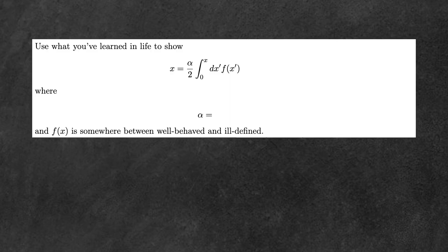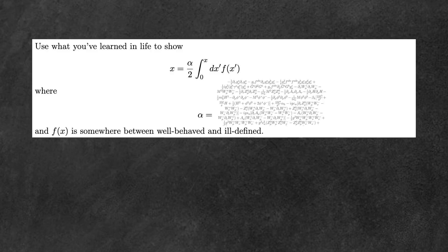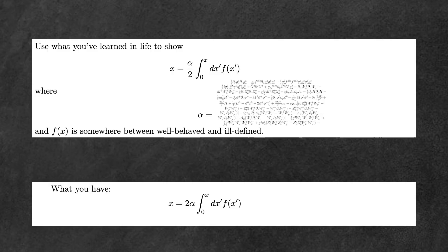That these variables are related to each other in this exact way, and you're so close. The integral is there and everything is of the right form, but the proportionality is wrong. The integral multiplies a factor of two instead of a one half — what it's supposed to be. What do you do?